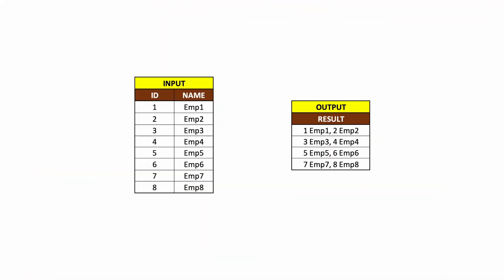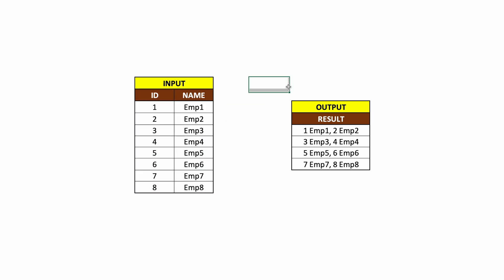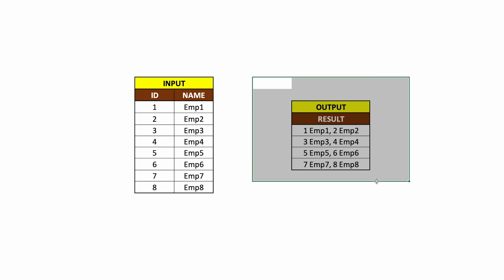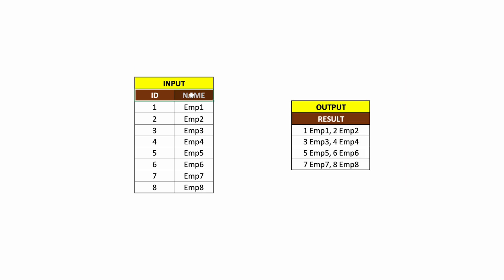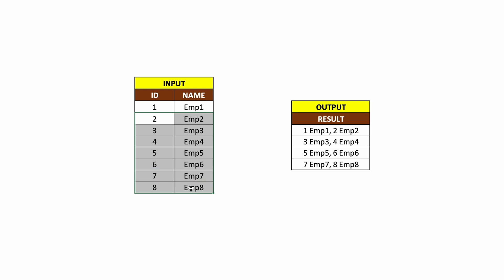As you can see, the problem statement is actually pretty straightforward. We have been given an input table and we are expected to write a query which is going to return the output as shown here. Now when we look at the input, we can see that we have two columns — there is an ID and there is a name. So this is some information about some employees. We can see we have eight different records, with ID one and employee one, and so on for all eight employees.